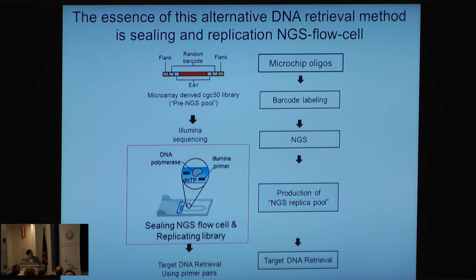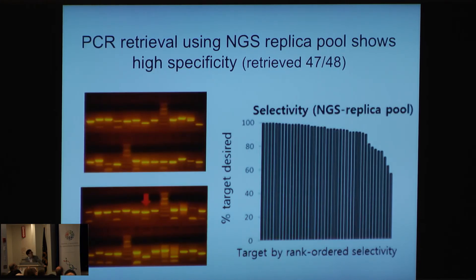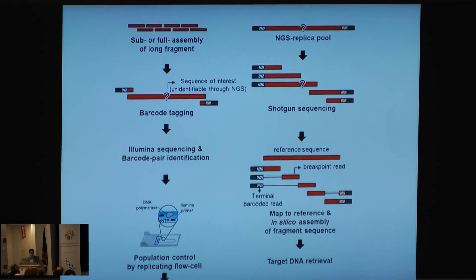Briefly, we synthesize microchip oligonucleotides with barcode labeling for primer amplification purposes, then perform NGS, sealing, preparation of the NGS replica pool, and target DNA retrieval. We are currently testing this strategy and finding that it shows very high specificity — we were able to collect over 95% of target error-free DNA clones. We are also extending this strategy to synthesize genes in a similar fashion to collect error-free genes.